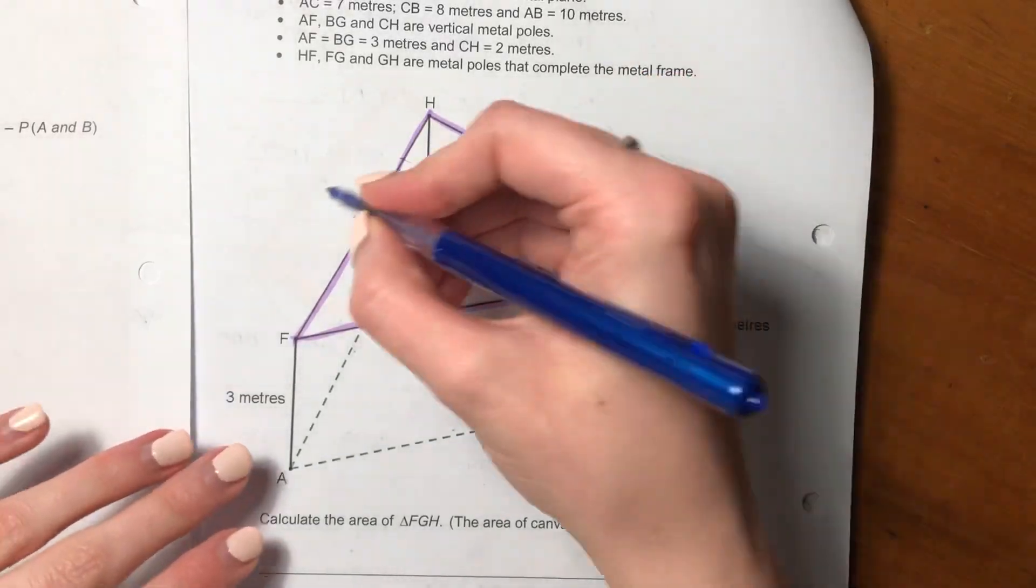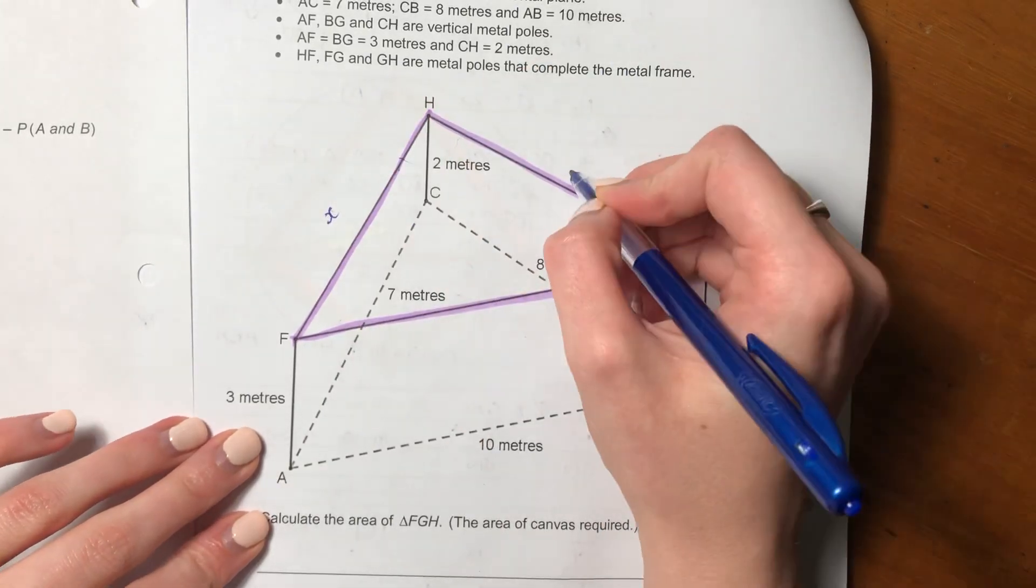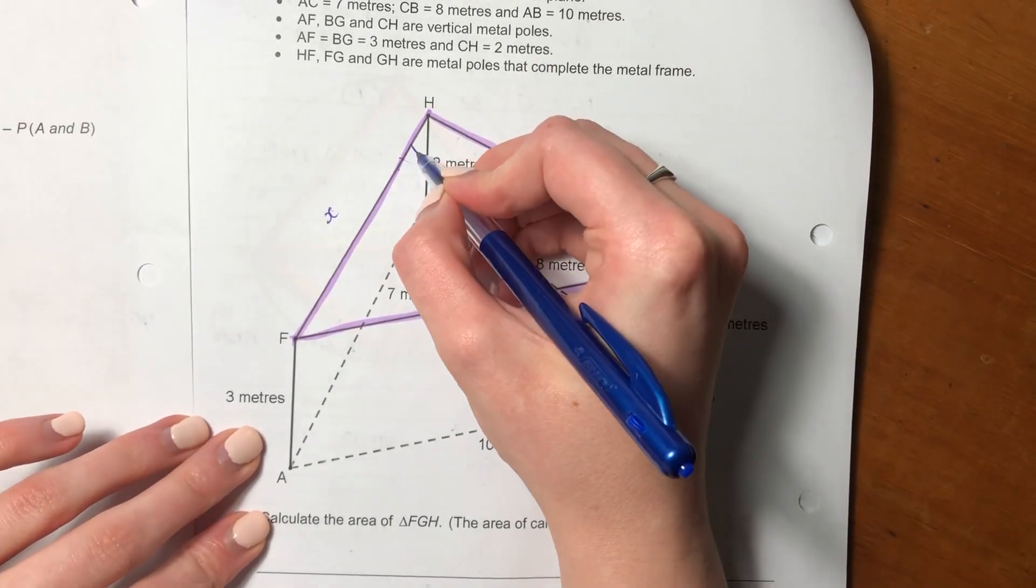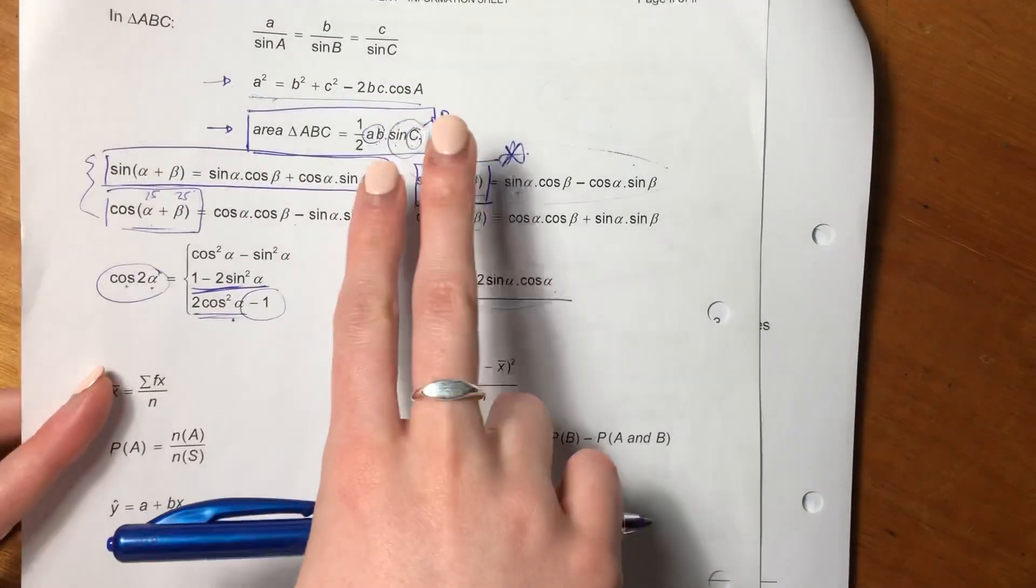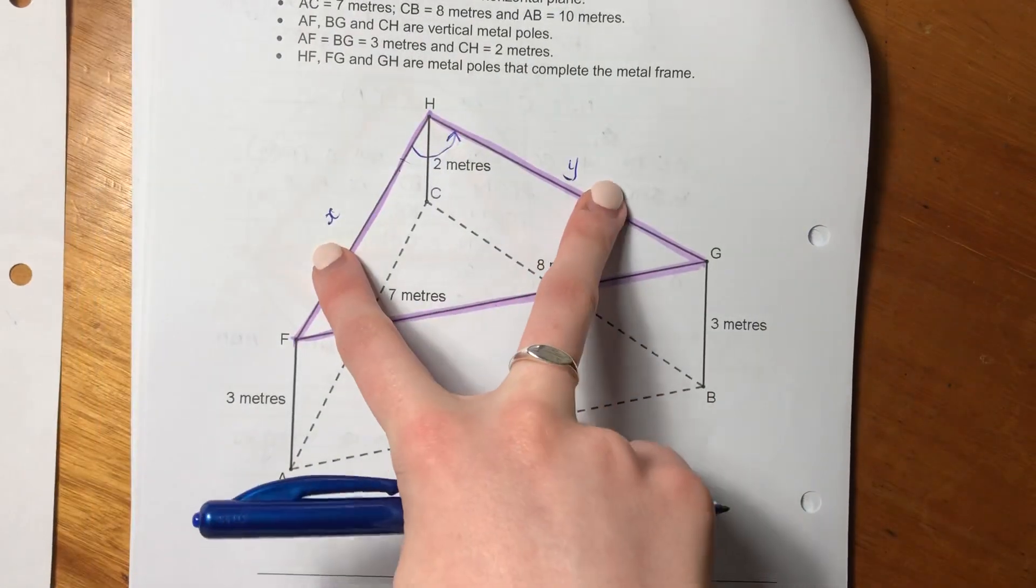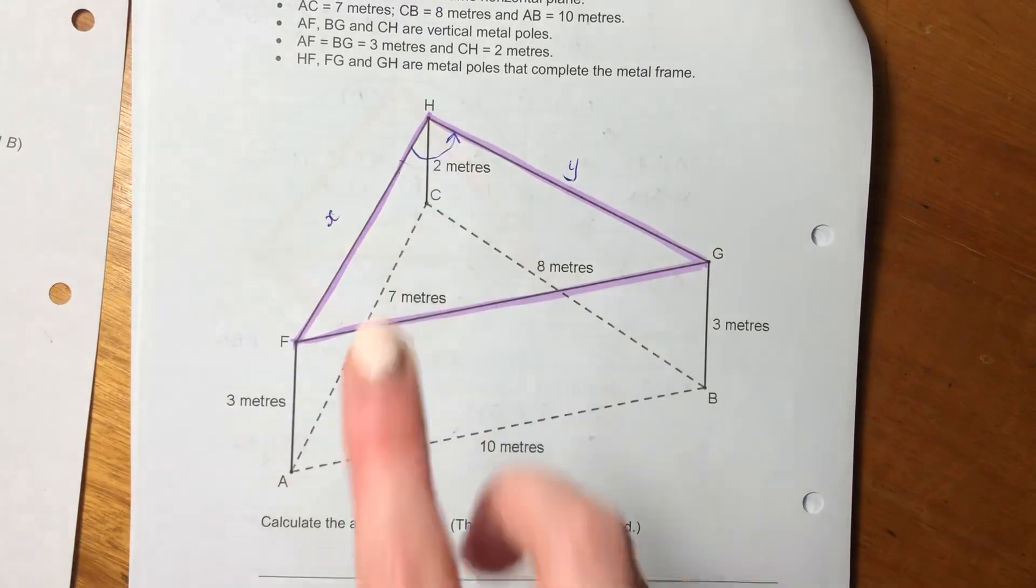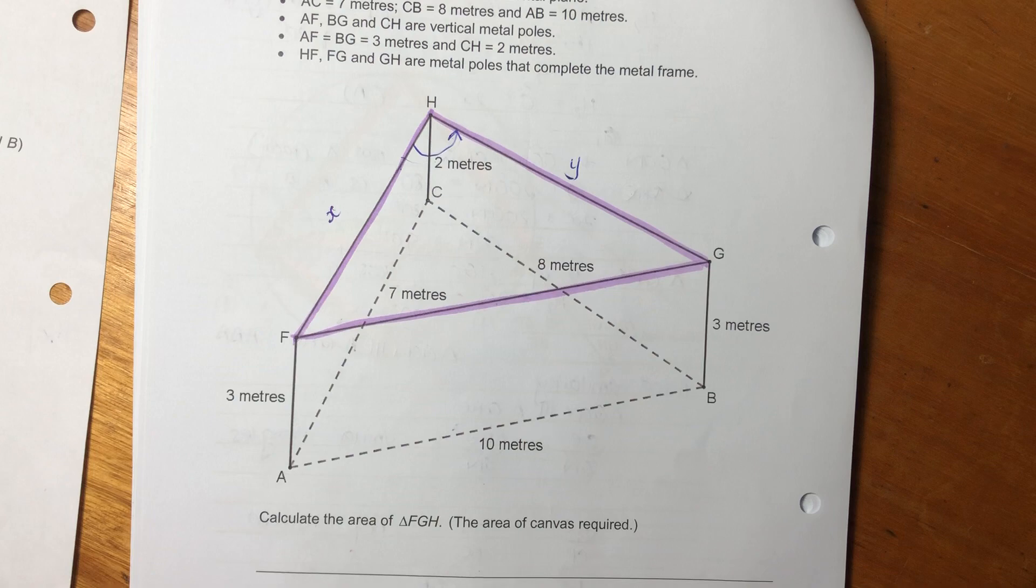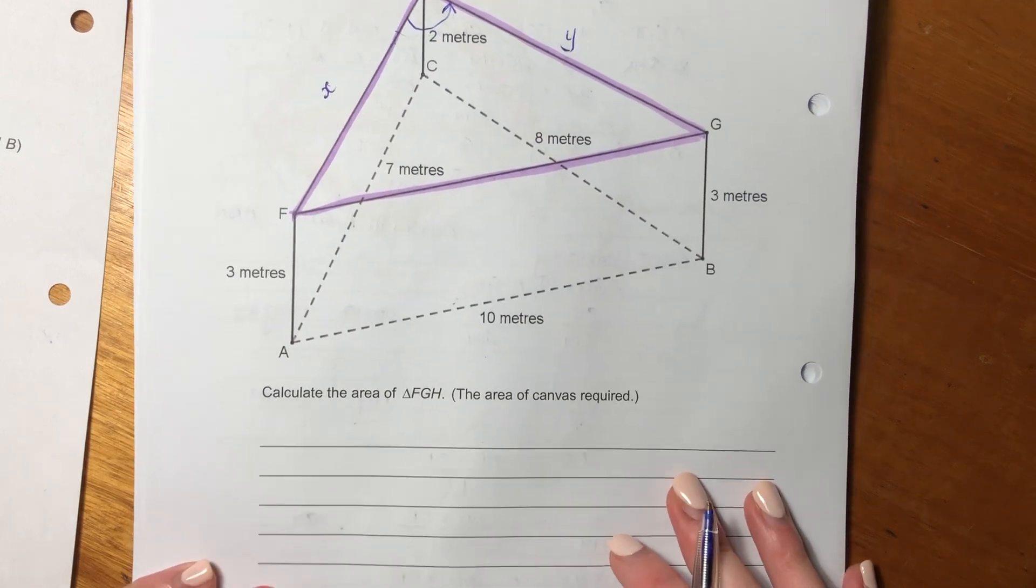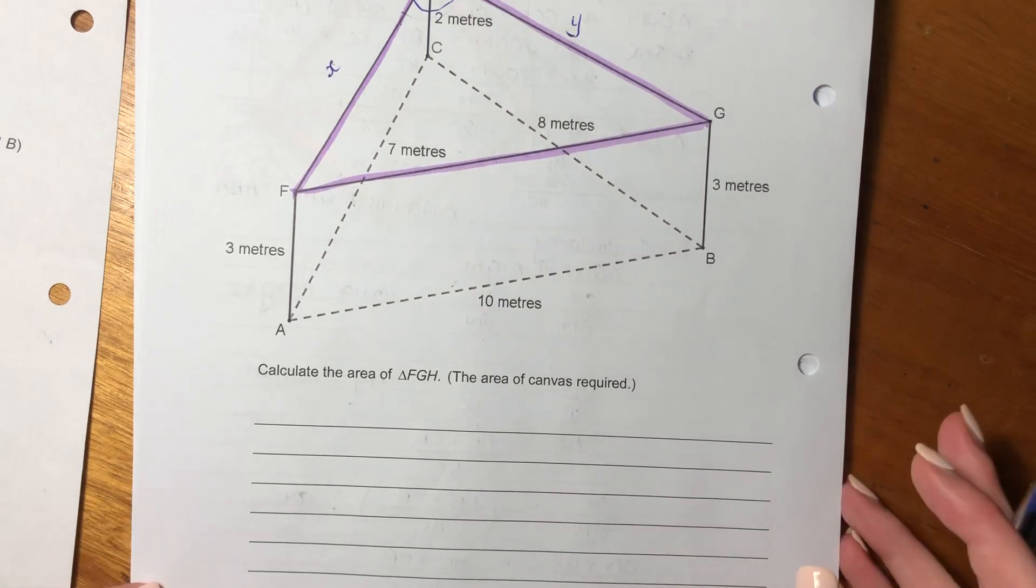So I propose that we use this side here, I'm just going to call that X, and we use this side here, and then we use this as our angle. Because remember, we use the two sides and the angle in between them. So I propose that we find these two lengths, find that angle, then we just plug it into that area formula and get the area of the top. That's what I propose. So there are different ways of doing this, but this is the way that I think is quickest and most efficient.